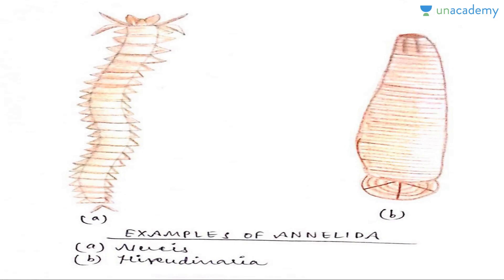This diagram shows two examples: one is Nereis and the other is Hirudinea. In Nereis, you can see the well-developed head and the lateral projections, which are the parapodia. In the leech, you can see the ventral sucker — the anterior sucker — and there is a posterior sucker as well. That's about it for the phylum Annelida; keep watching and see you next time.